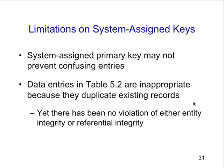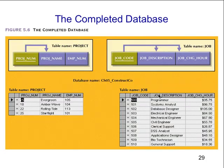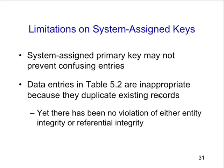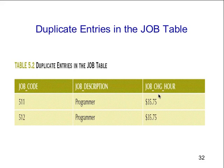We can take it a little bit further. The data entries are inappropriate because they have duplicate existing records. In the original data there were duplicate records, so there has been no violation of entity integrity or referential integrity — instead we end up with duplicate existing records. This happens normally when you take a database in second normal form and put it into third normal form, because you're taking the data from a denormalized state.